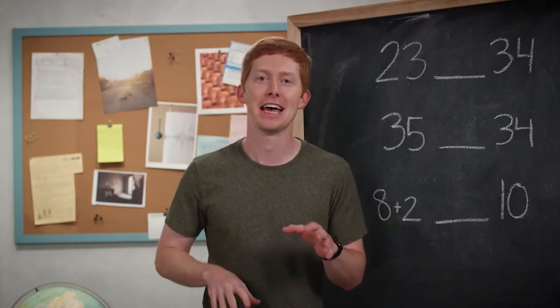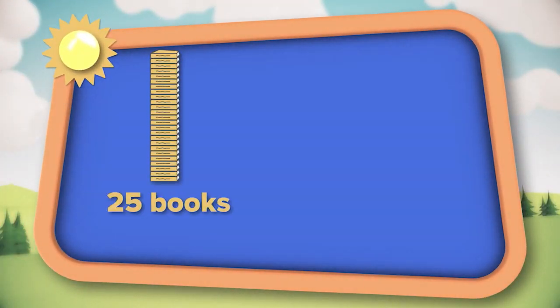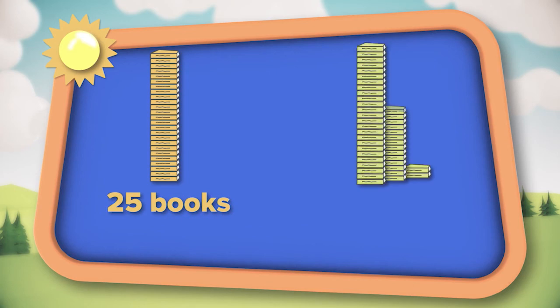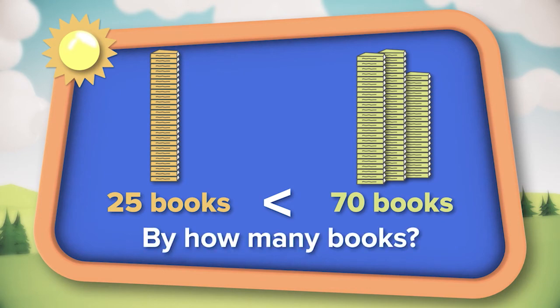Last task of the day — are you ready? Here's the scenario: Miss Courtney has 25 books and Miss Stacy has 70 books. If we compare those numbers, we know Miss Stacy has more books than Miss Courtney — 70 is larger than 25. But what if we said, by how many? Can you figure out how many more books Miss Stacy has than Miss Courtney? I bet you can. We're going to use a hundreds chart to do this.